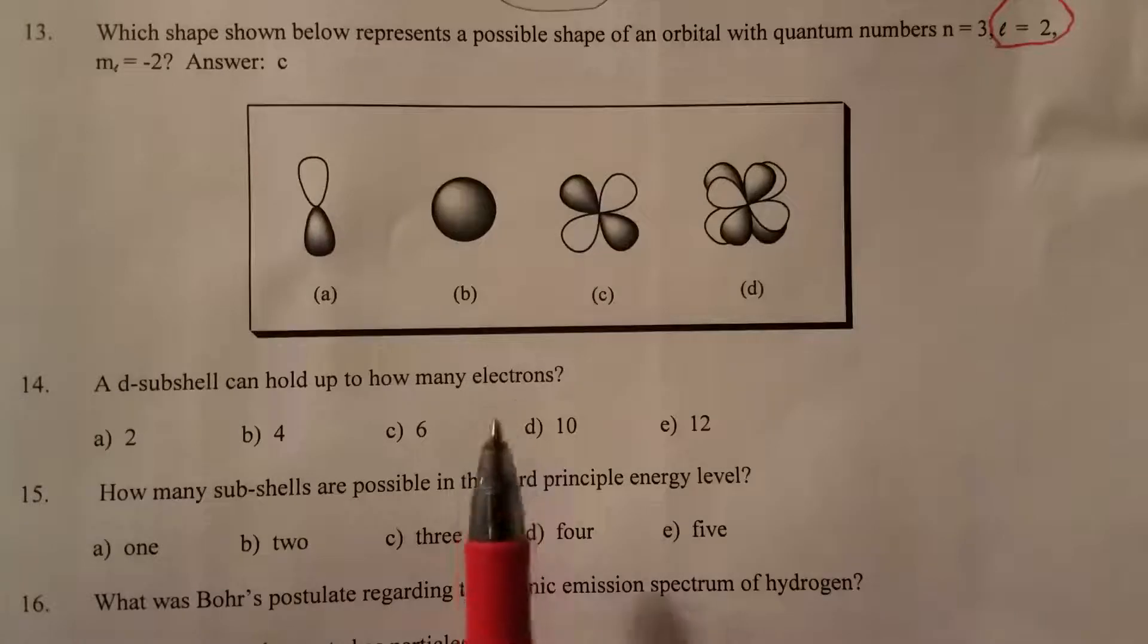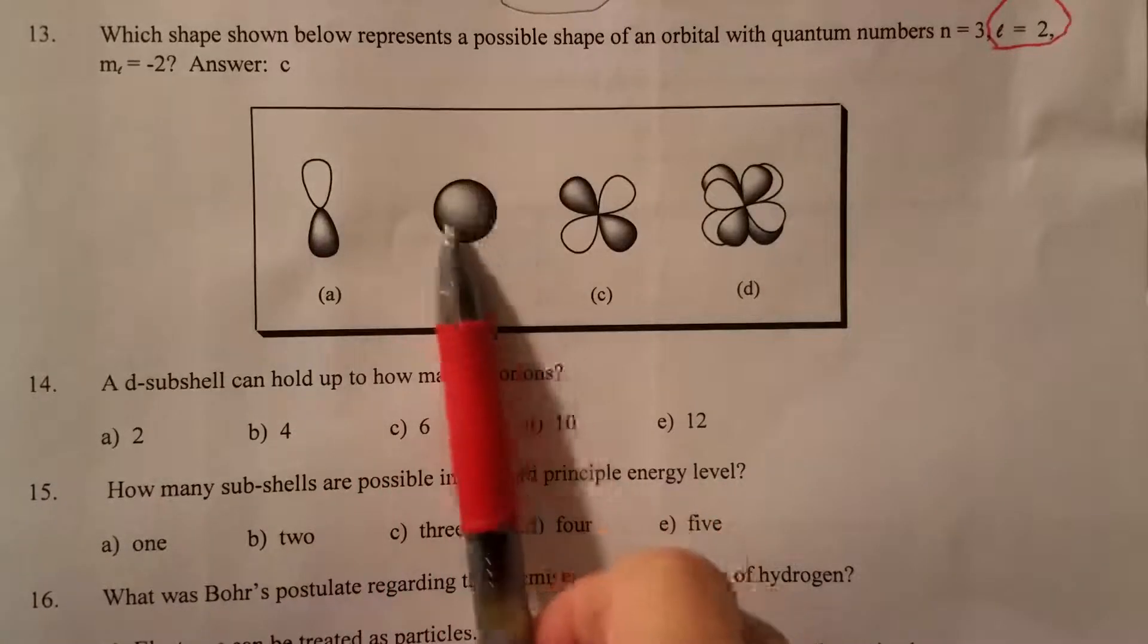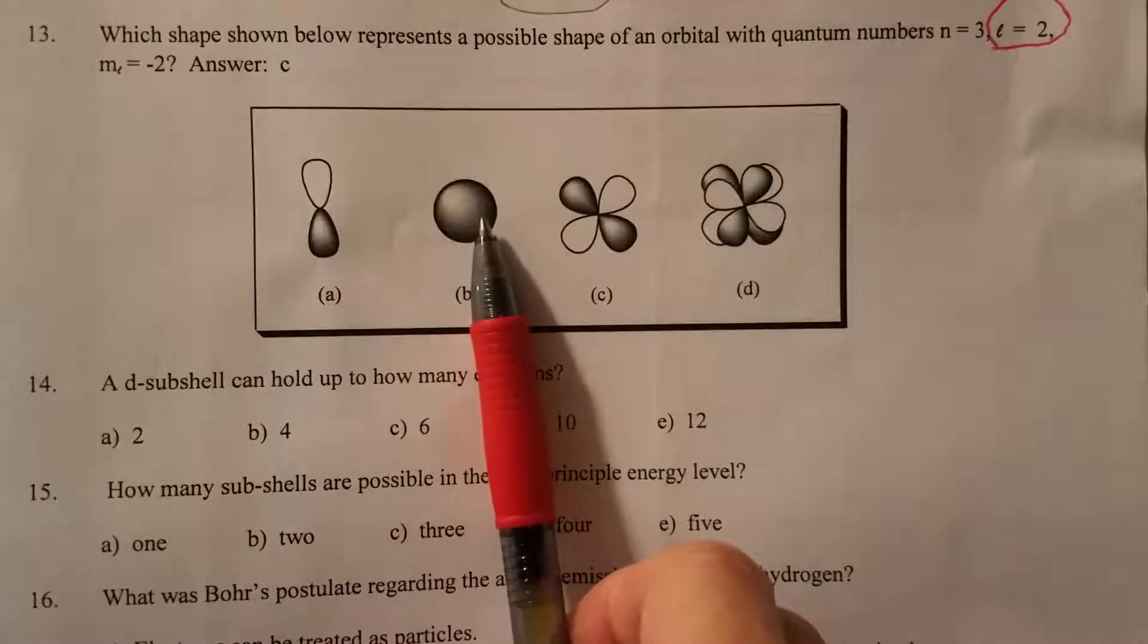And now if you recall, the shape of the s subshell is this one. That's spherical. So that's the s subshell, l equals 0.